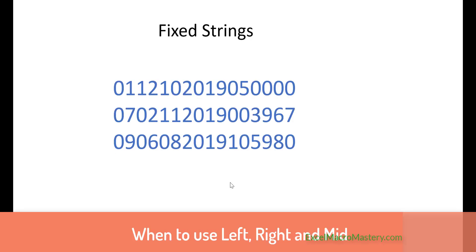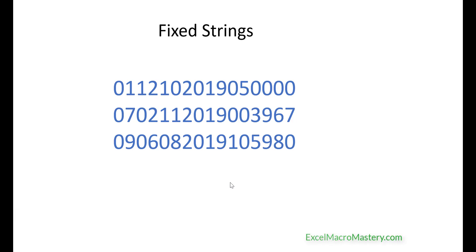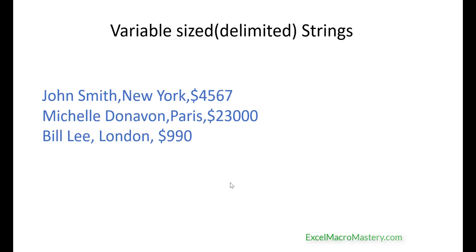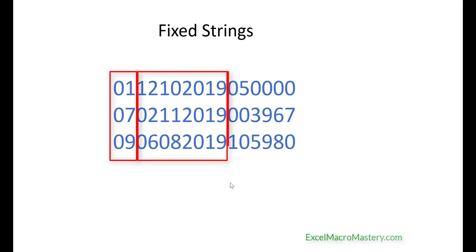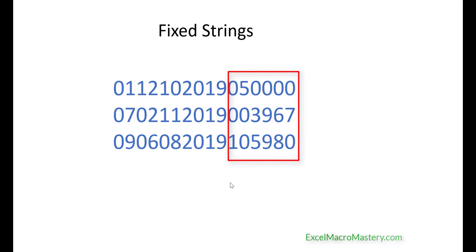Now that we have seen how to use these functions, the question is when should we use them and when should we avoid them. These functions work best with fixed strings and don't work so well with variable strings, because it becomes very complex and there is an easier way. Fixed strings are where the text is always the same length and each field is always the same length. For example, the first two characters represent the transaction type, the next eight represent a date, and the next six represent an amount. In this scenario the strings will always be the same length and the fields will always be in the same position. We can use left, right, and mid to extract data here as the positions never change.